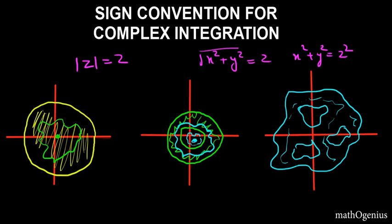Now, this integration will be set in the positive direction when it goes counterclockwise. Why? Because when you are sitting on the curve and moving, the region is on your left. For example, if you are sitting on the curve facing the direction of travel, your left hand will be pointing into the region. So when the region is always on the left, that integration is positive.